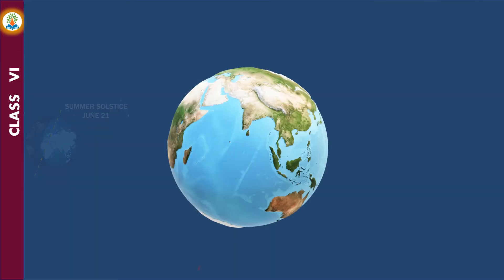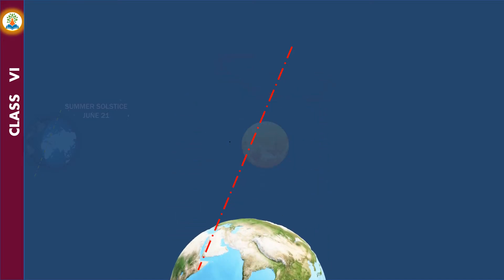There are two factors which result in the occurrence of different seasons at different times of the year. First is the revolution of the Earth, and second is the inclination of the Earth's axis at a fixed angle and direction.